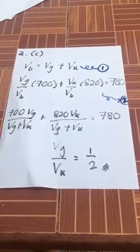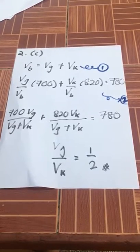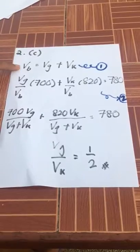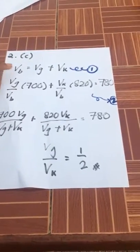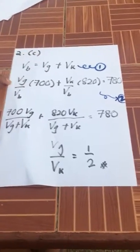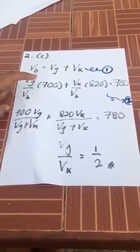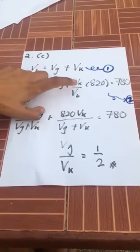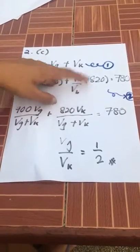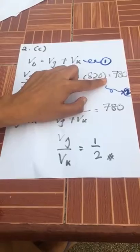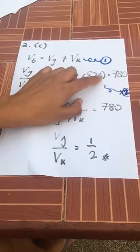Assuming V blend equals Vg plus Vk, you have to find two equations. Equation one: V blend equals Vg plus Vk. Second equation: 700 Vg plus Vb plus Vk equals a total of 780, because V blend equals 0.78, so times by 1000 you get 780.